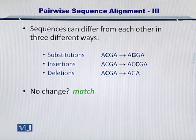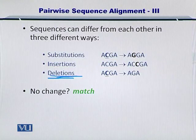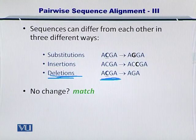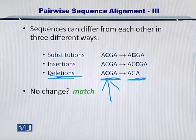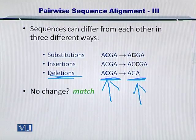Now let's take a look at deletions. In the case of deletions, if you have a sequence ACGA and you're comparing it with another sequence AGA, you can clearly see that the C — cytosine — has been deleted from this sequence.